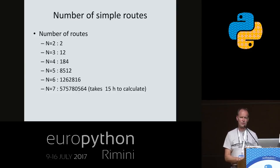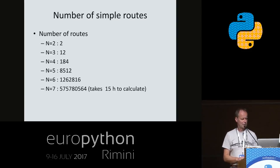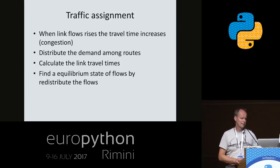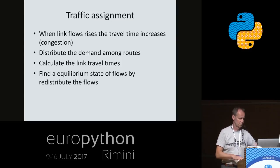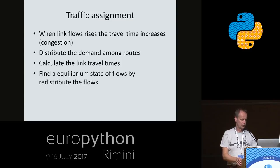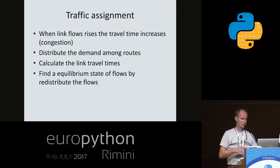Of course we don't have to consider all the routes — we have Dijkstra and A* methods to find shortest path algorithms, but it's still not that easy. We could just ask Dijkstra to give us the shortest path. But when we have a large number of travelers on the road, the travel speed goes down — what is called congestion. As more and more people use the same road, our travel time increases.